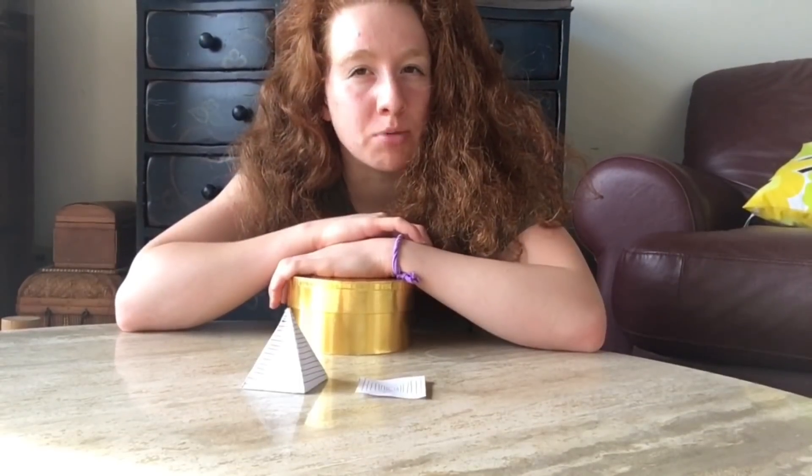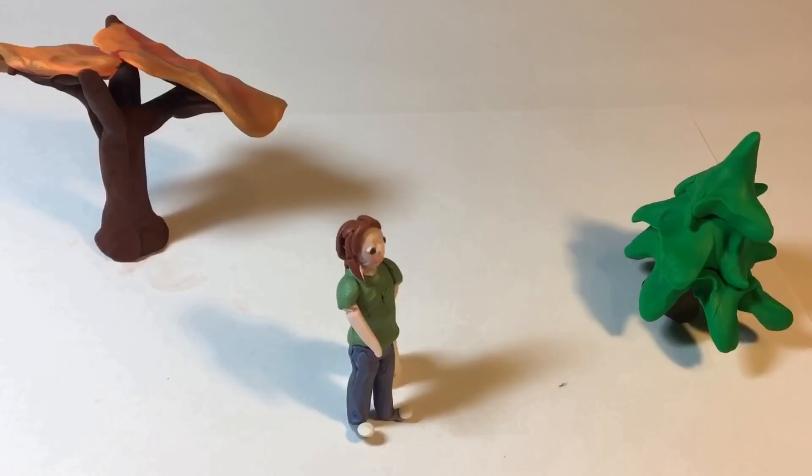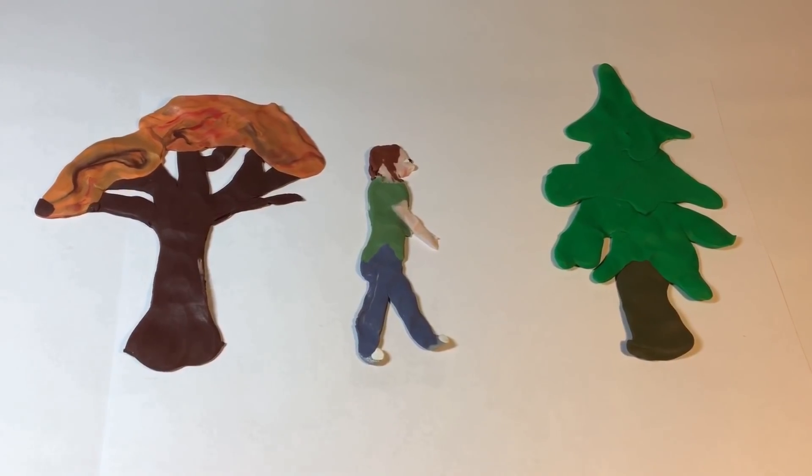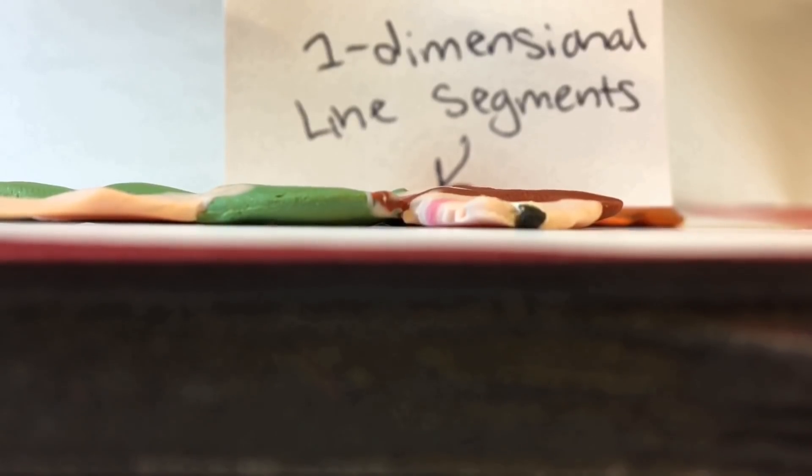So we know what a four-dimensional object is, but what would it actually look like if we lived in four dimensions? Imagine you were flattened to a 2D world. What would you see? You would only be able to look at the edges of the other objects around you, thus your whole world view would consist of a collection of line segments.